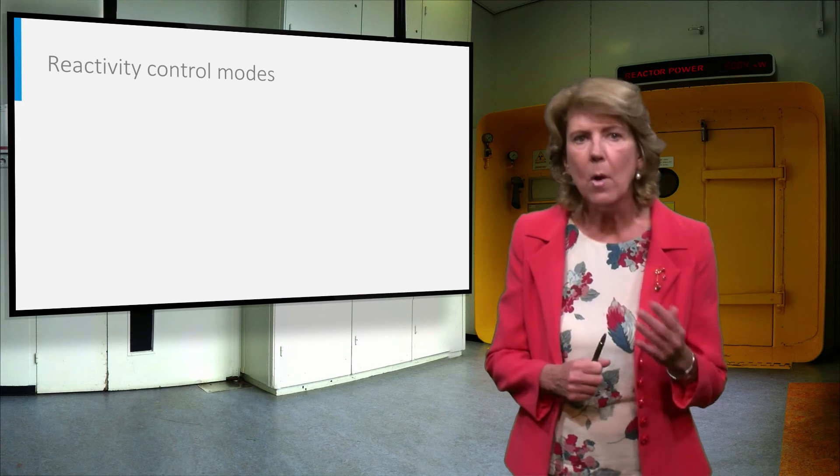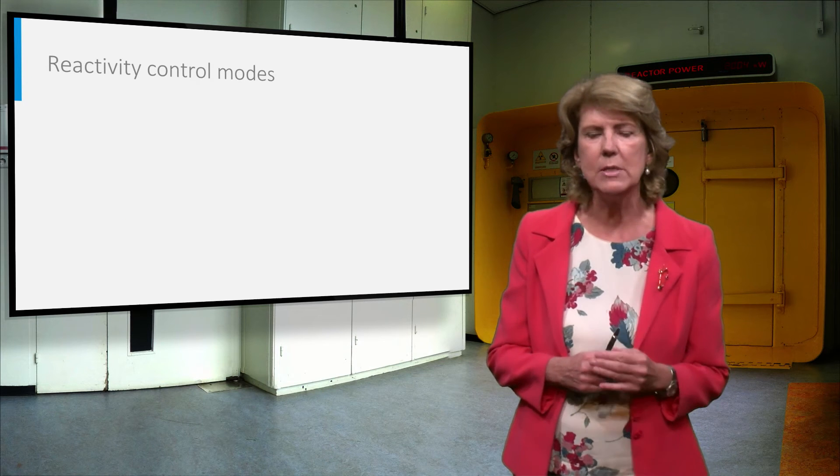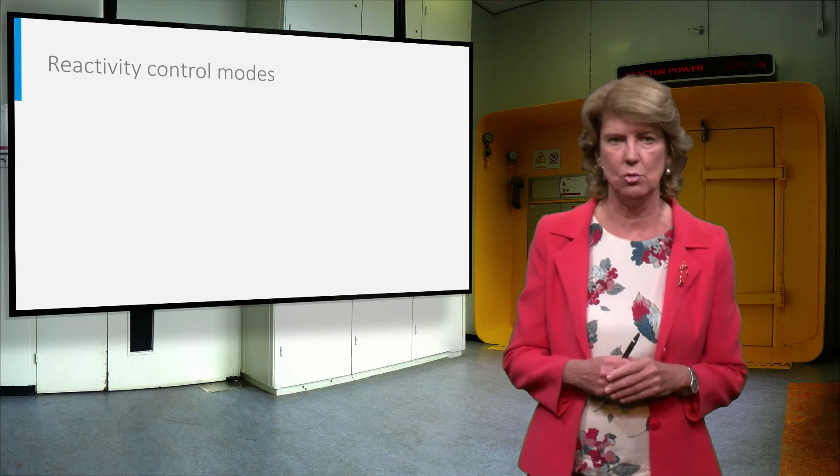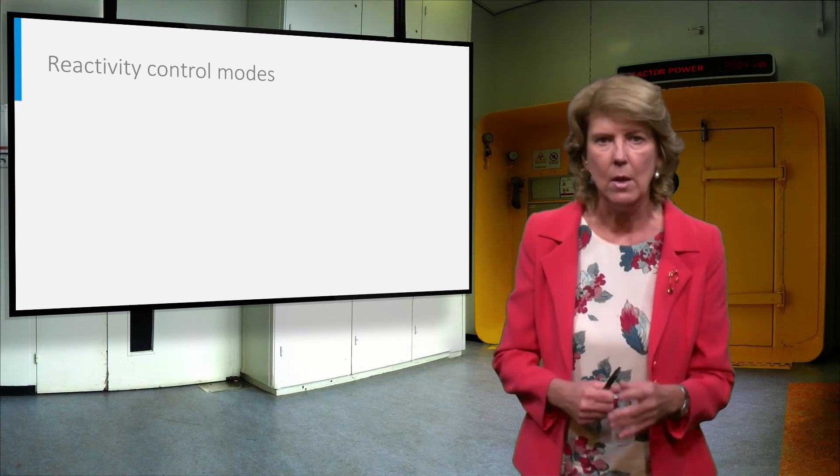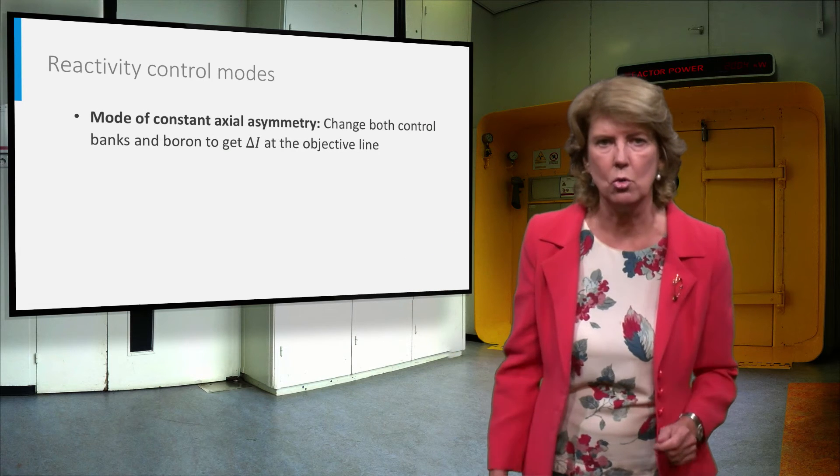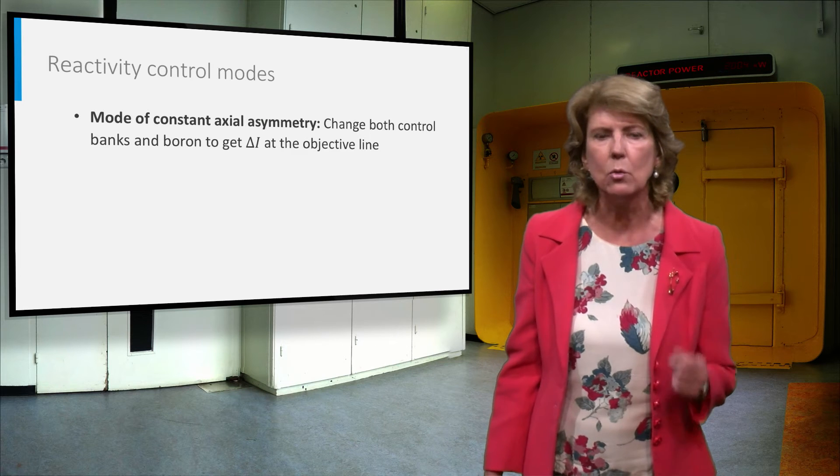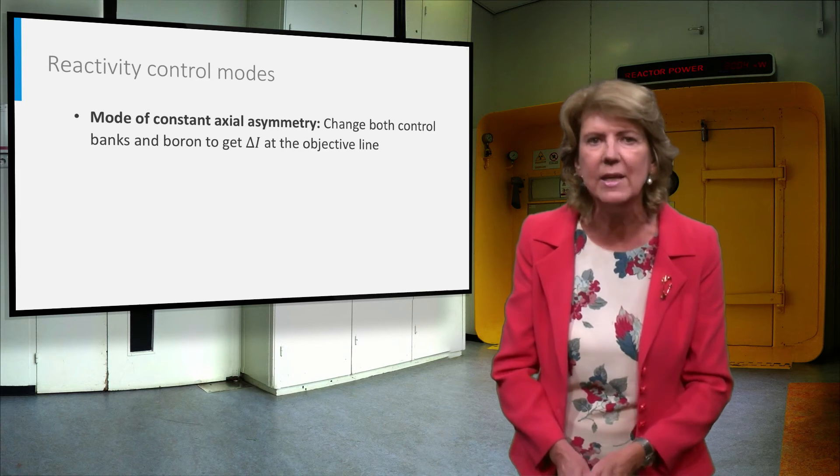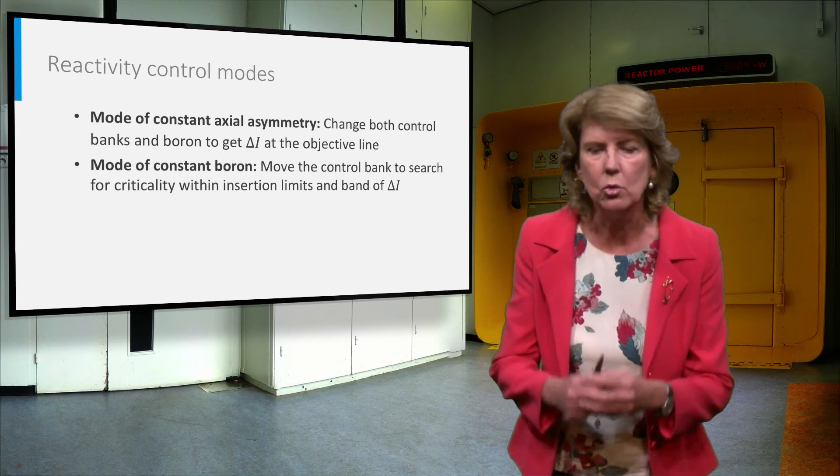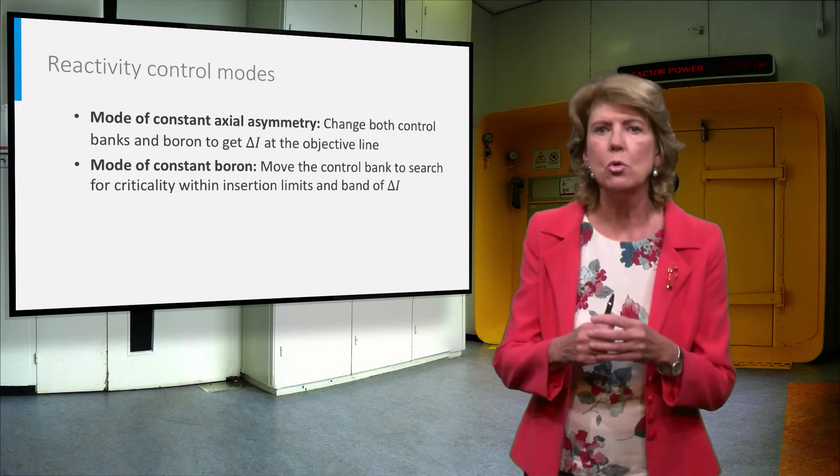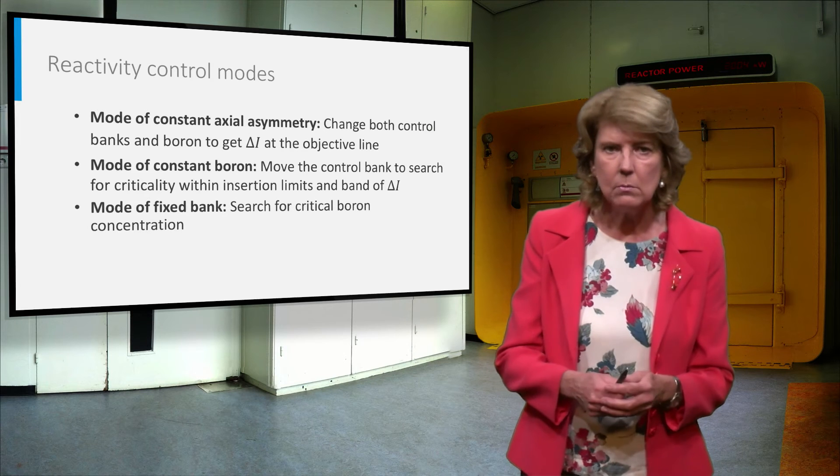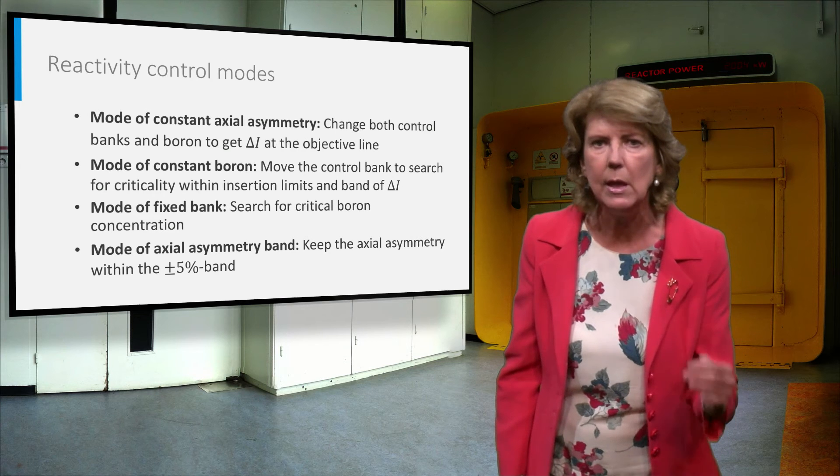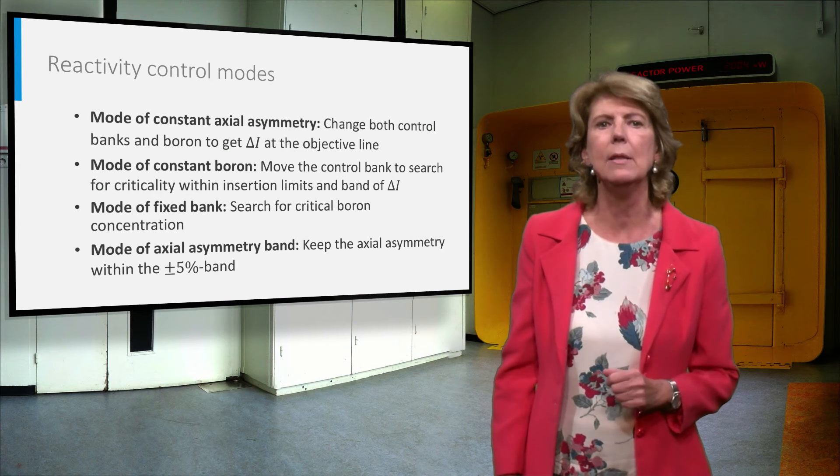There are four modes to use the control systems to maintain criticality within the technical specifications: to use control rods and soluble boron together to maintain the axial asymmetry within the green band, to use only control rods, to use only soluble boron, or to use both systems to maintain the axial asymmetry within the green band.